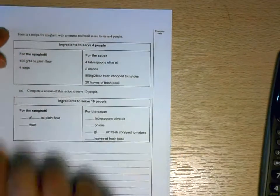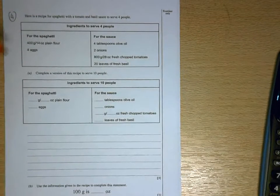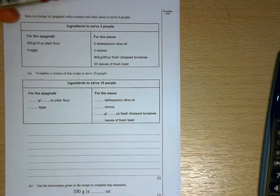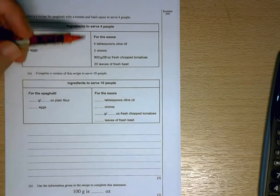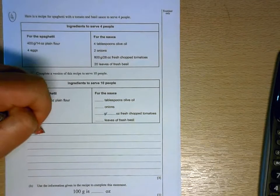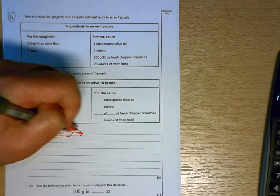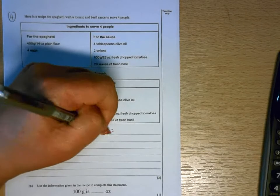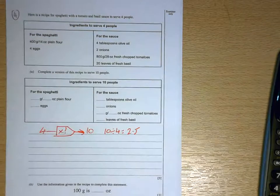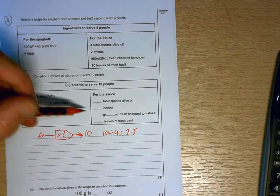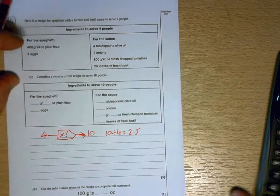And the final question. Same again. Here we're going from a recipe for spaghetti for 4 people to a recipe for 10 people. So what am I going to multiply by to go from 4 to 10? That means I've got to do 10 divided by 4, which is 2.5. So everything I fill in here is going to be 2.5 times what we're given up there.